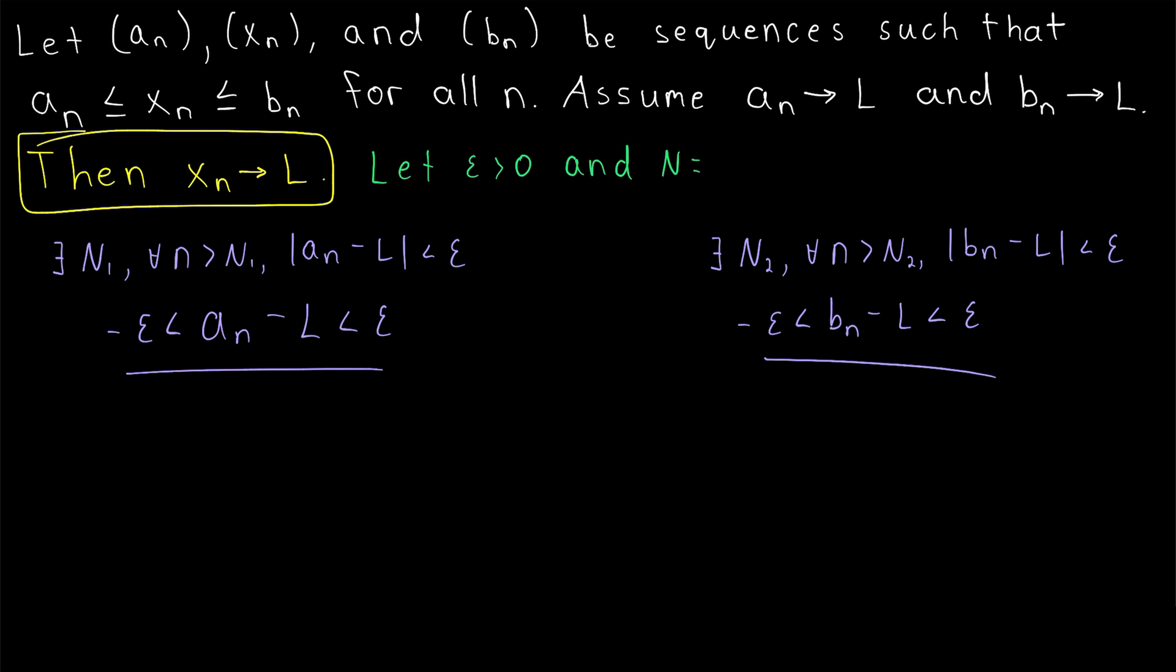Now, in both of these inequalities, we can add the limit L through them to get a_n and b_n by themselves. So we have that a_n is between L minus epsilon and L plus epsilon, and similarly for b_n.